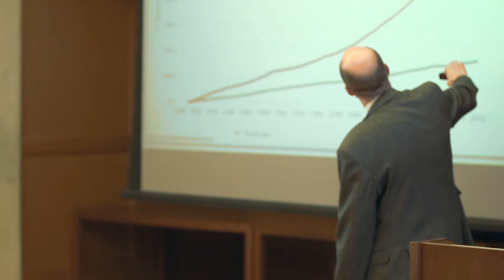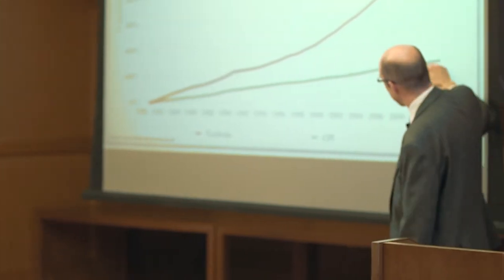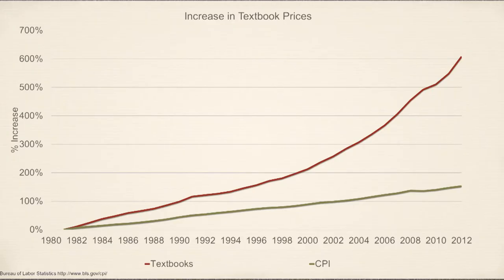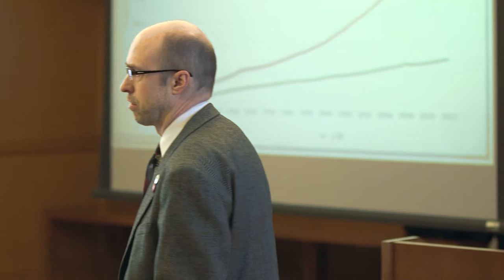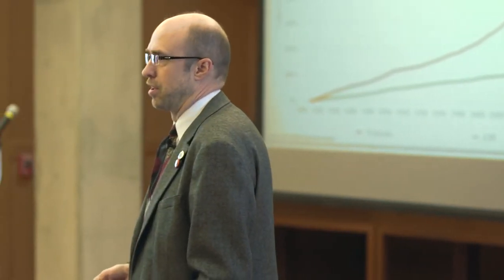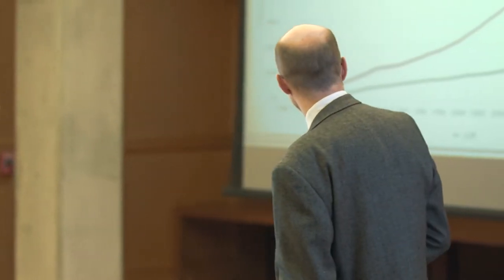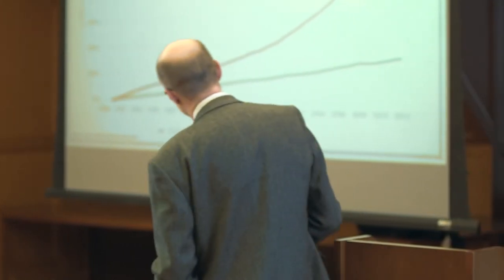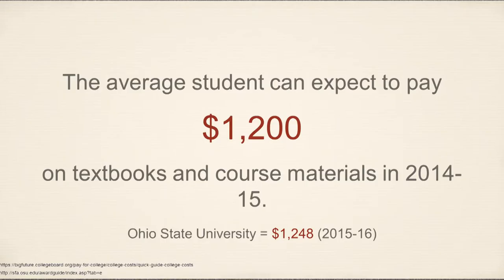The cost of textbooks has increased by about four times the rate of inflation. The green line there is the consumer price index — that's inflation — and the red line is textbook costs as they've increased over time. About a decade ago there was actually a US Congressional inquiry into the cost of textbooks and why they're going up so quickly, and it obviously didn't slow anything down.